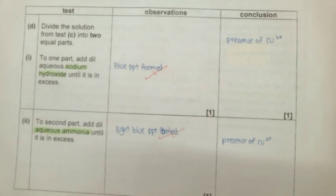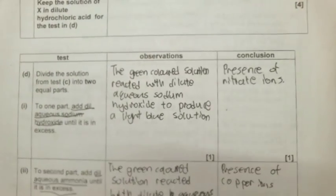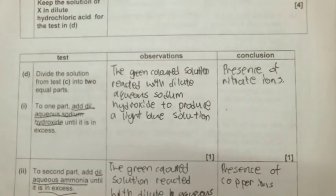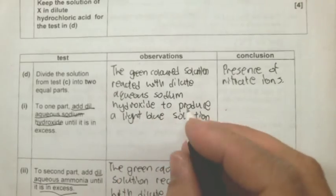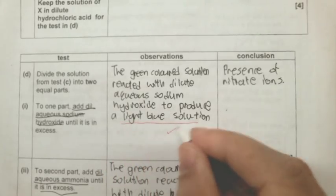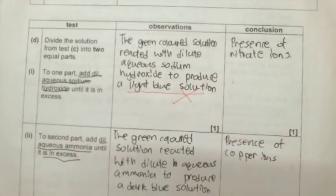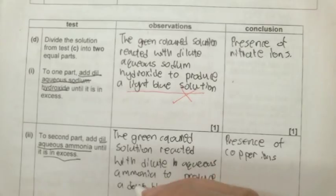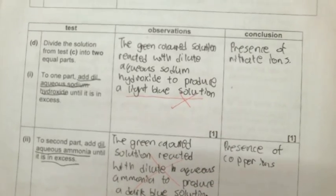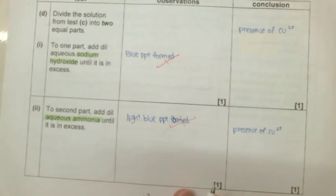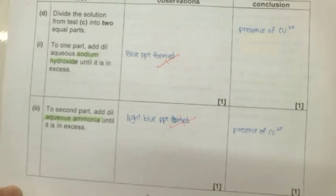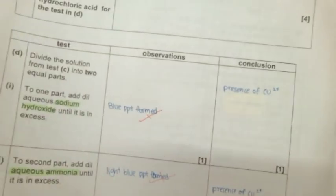Another student wrote something like that. Now again there's no mention of blue PPT but the light blue solution so we shouldn't write like that and you shouldn't write like that. So I repeat if you will happen to be adding sodium hydroxide or aqueous ammonia you should refer to the table behind to write down your answers.